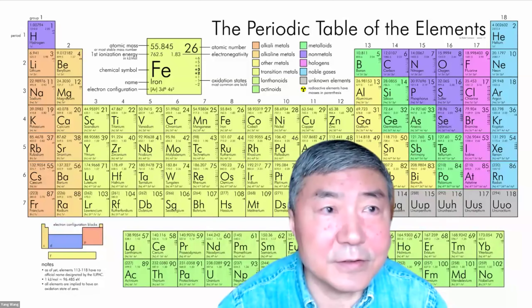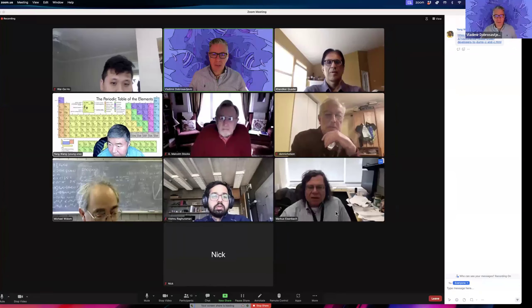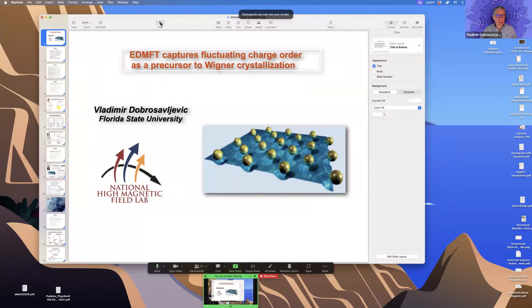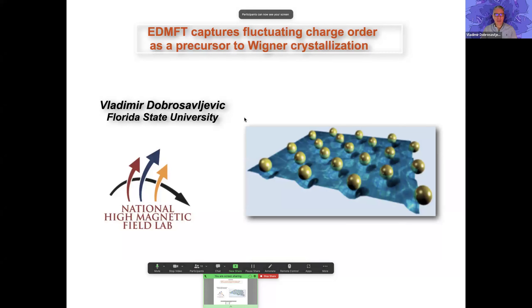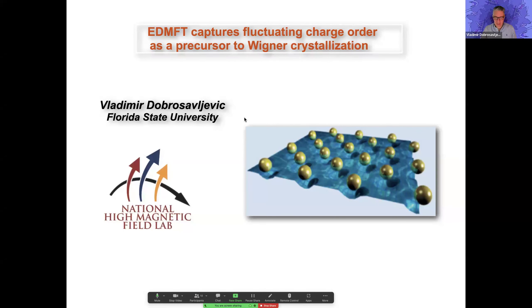So let me share the screen and start the presentation. The title is: EDMFT captures fluctuating charge order as a precursor to Wigner crystallization. EDMFT is a version of DMFT developed to capture collective field effects and density fluctuations in materials.